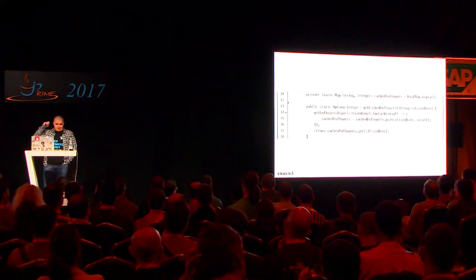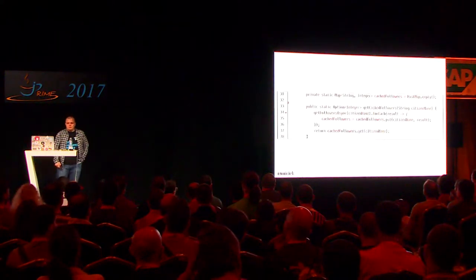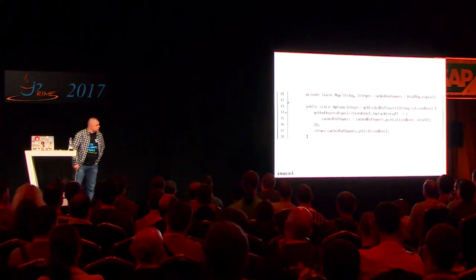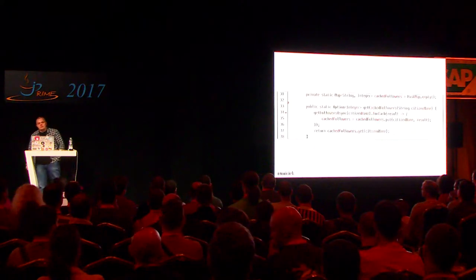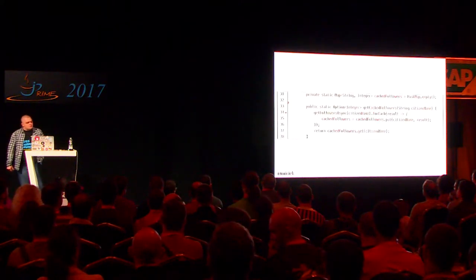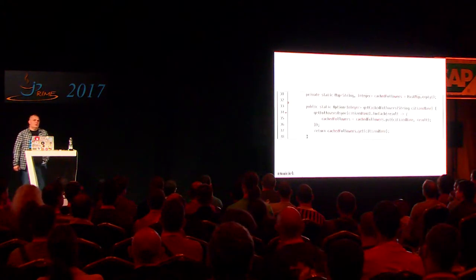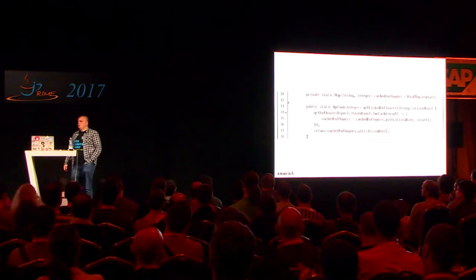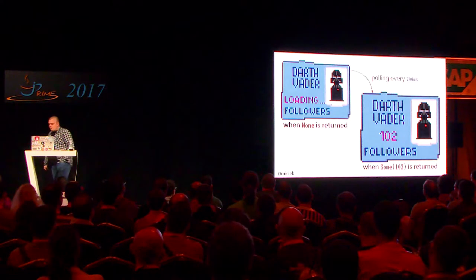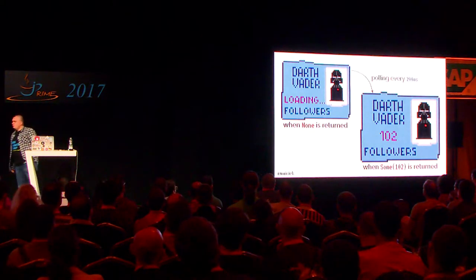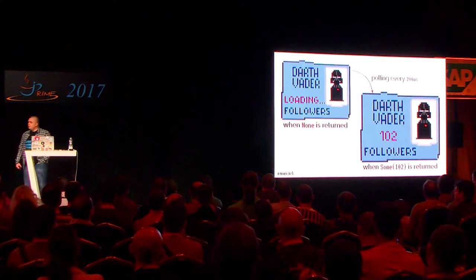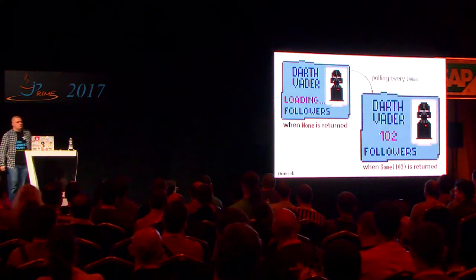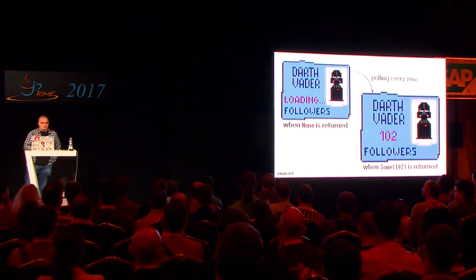Let's change our API to have Option as a return type. In line 33 we change the Integer return type to Option of Integer, and in line 37 we get rid of getOrElse because get already returns an Option. That's all we need to change. The web application needs to be updated accordingly — now whenever None is returned, we get 'loading followers', and whenever Some with the real value is returned, we get 102 or the real number of followers. The user now knows what's happening.